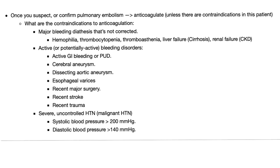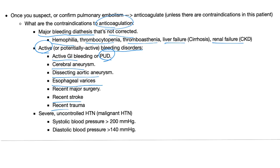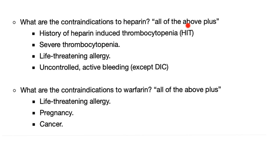What are the contraindications to anticoagulation with heparin and warfarin? Major bleeding diathesis that's not corrected — hemophilia, thrombocytopenia, thrombasthenia, liver failure, renal failure. Active bleeding disorders such as active GI bleed or peptic ulcer disease, cerebral aneurysm, dissecting aortic aneurysm, esophageal varices, recent surgery, recent stroke, recent trauma. Severe uncontrolled hypertension (malignant hypertension: systolic >200, diastolic ≥140). Contraindications specific to heparin also include history of HIT, severe thrombocytopenia, life-threatening allergy to heparin, and uncontrolled active bleeding except DIC — DIC actually needs heparin.